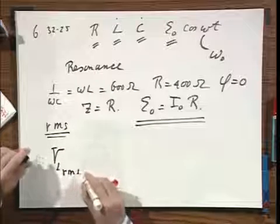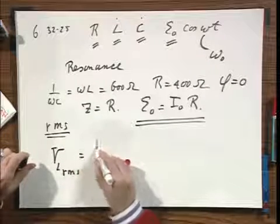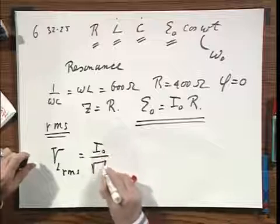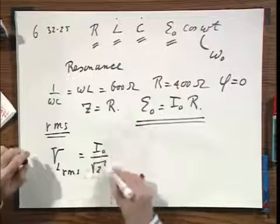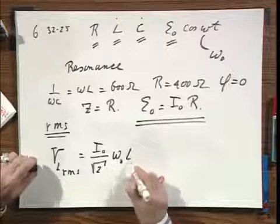The voltmeter over the self-inductor would read, undoubtedly, I zero divided by the square root of two because that's the root mean square of the current, times omega zero L.